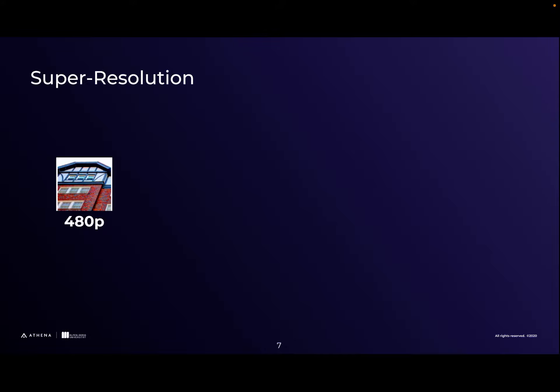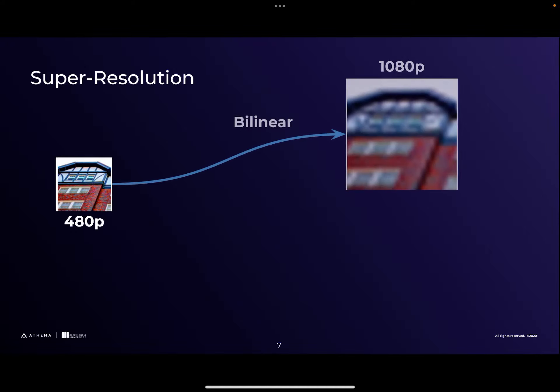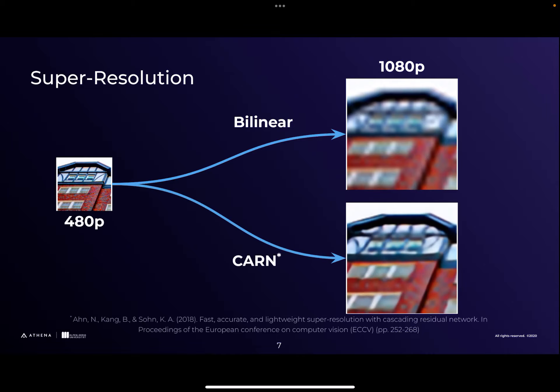So let's assume we get a 480p resolution video from the server, which is quite low nowadays. The default solution is to match the screen resolution using bilinear interpolation, which causes artifacts on the image and disturbs visual quality. Super resolution is a solution that can address this, and these learning-based super resolution methods can upscale the input image to a higher resolution while maintaining good visual quality, which is a pleasant experience for users.